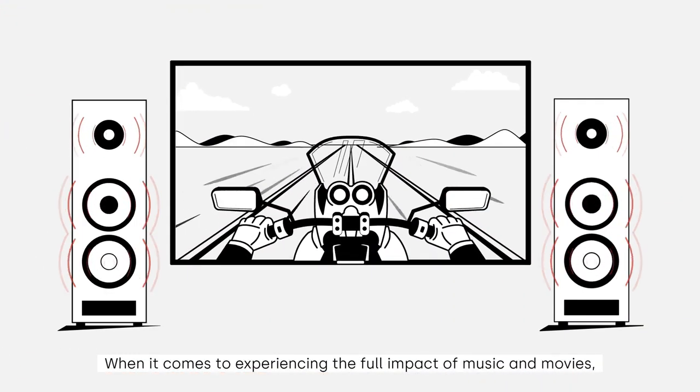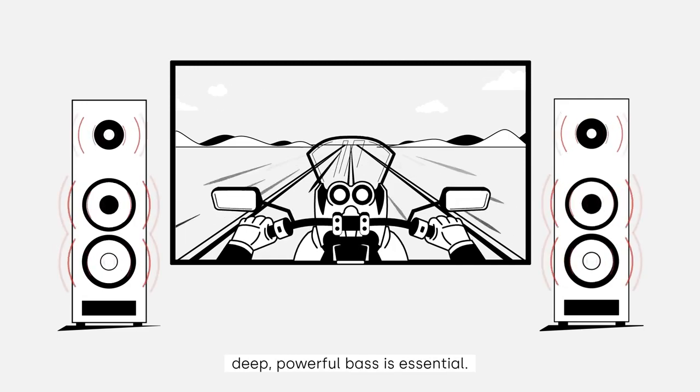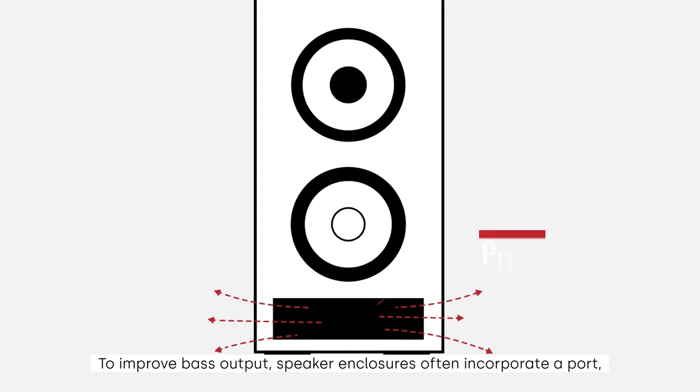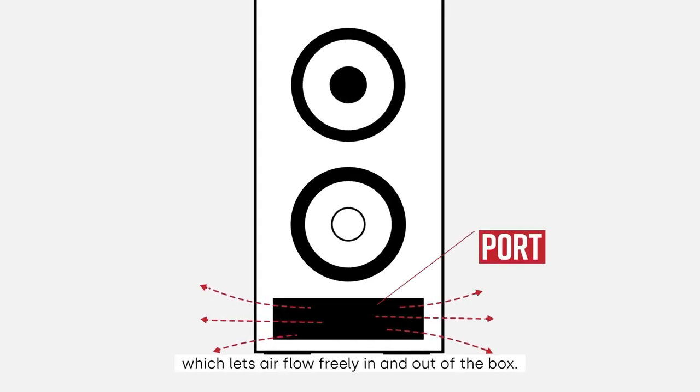When it comes to experiencing the full impact of music and movies, deep, powerful bass is essential. To improve bass output, speaker enclosures often incorporate a port, which lets air flow freely in and out of the box.